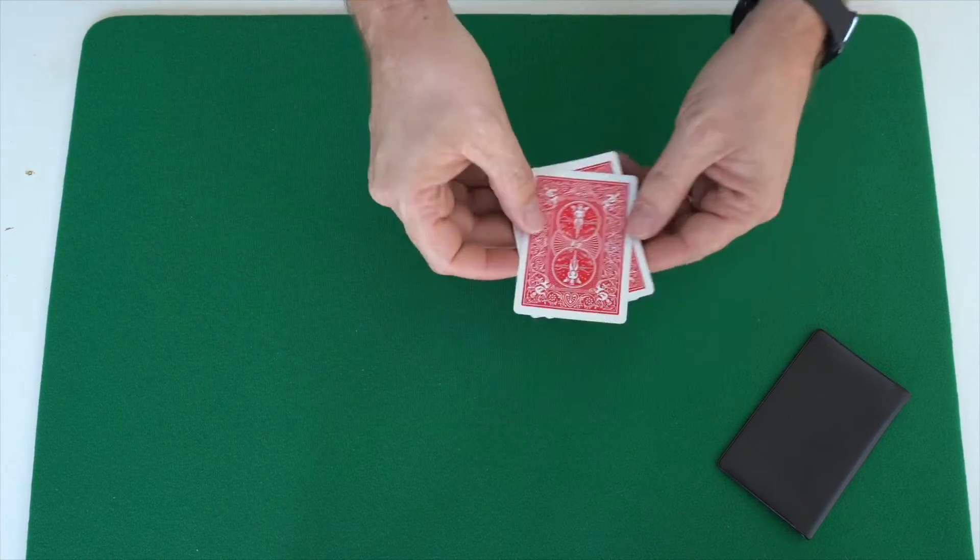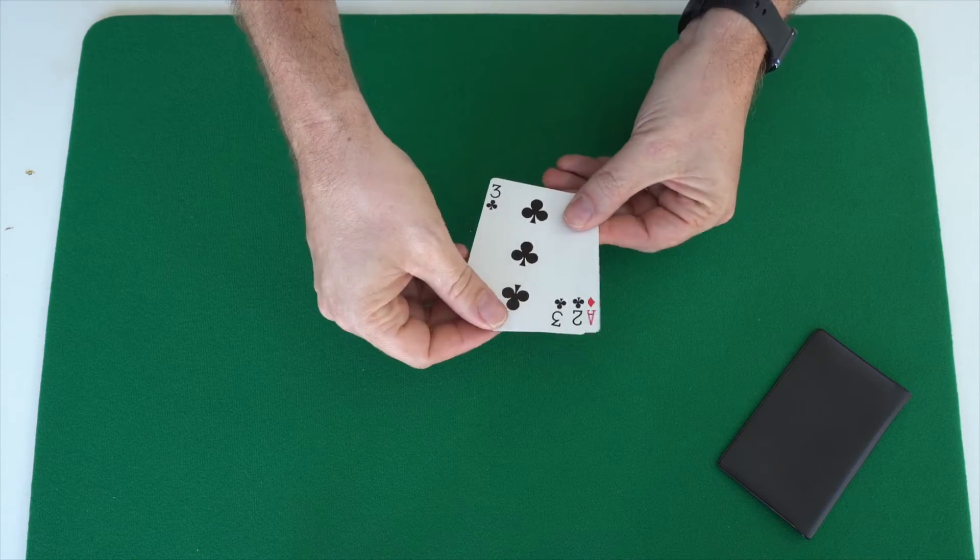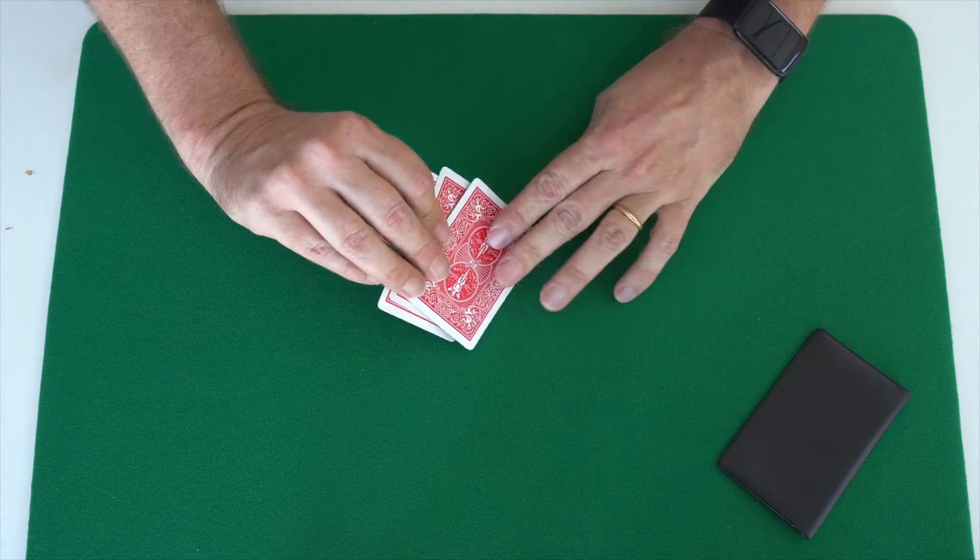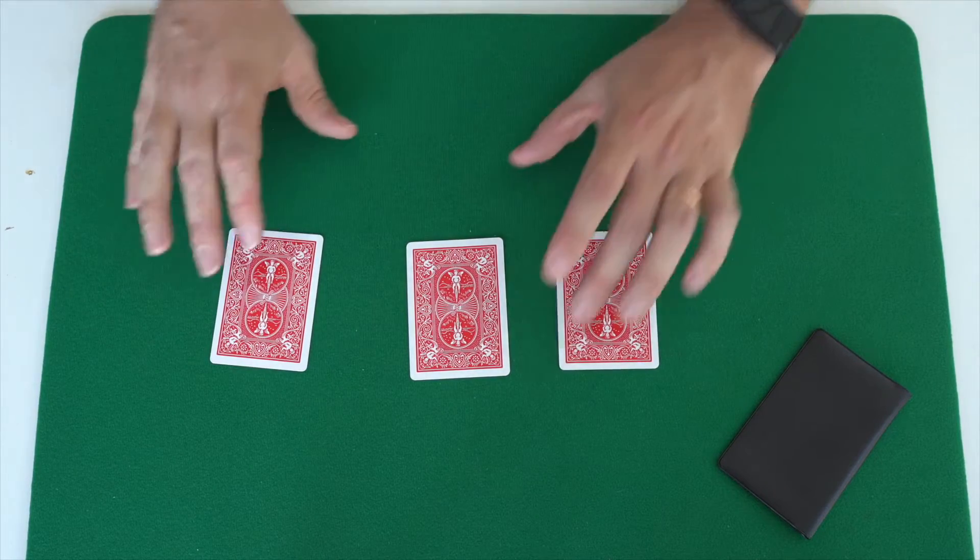We'll try again, don't worry. Let's give them another little shuffle like this and once again keep your eye on the red ace. This time we'll put it in the middle and the two black cards go on the sides.